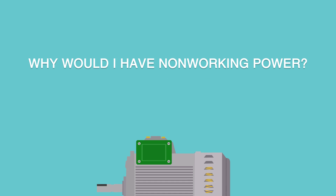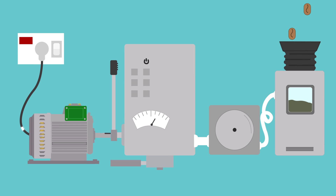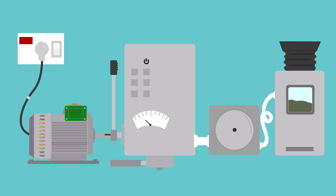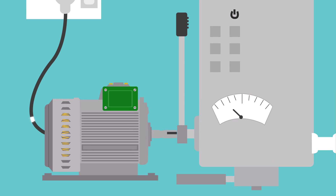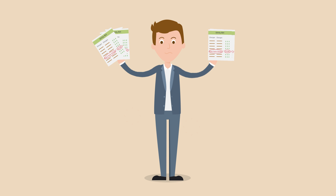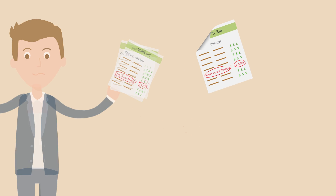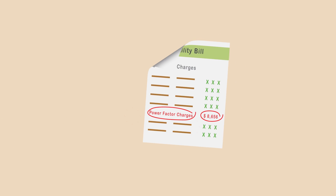Why would you have non-working power? Oversized motors. Oversizing is a design precaution used to ensure power is adequate for the job at hand. Think of an idling motor — is it doing any work? No, but it's still consuming power to keep the electrical field operating. That's reactive power. Why haven't you heard of this charge? Many utility companies bury this charge in the bill so it's not easily discovered.